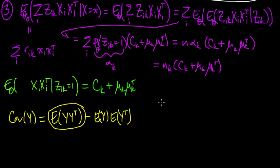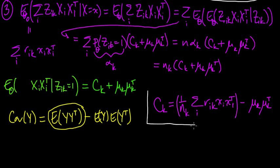We would like to solve this for ck. Let's do the trick again of getting rid of alpha_k. Alpha_k was, just like before, nk over n. So this becomes nk times ck plus mu_k mu_k transpose. Now we'd like to solve this for ck.